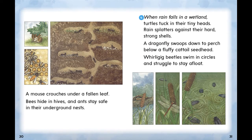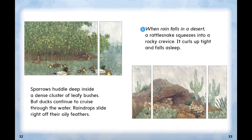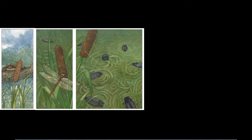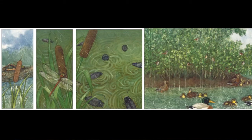When rain falls in a wetland, turtles tuck in their tiny heads. Rain splatters against their hard, strong shells. A dragonfly swoops down to perch below a fluffy cattail seed head. Whirligig beetles swim in circles and struggle to stay afloat. Sparrows huddle deep inside a dense cluster of leafy bushes. But ducks continue to cruise through the water — raindrops slide right off their oily feathers. Summary: Turtles tuck their head into their shells, a dragonfly sits on a cattail, beetles try to float, sparrows stay hidden in trees, and ducks swim in the water.